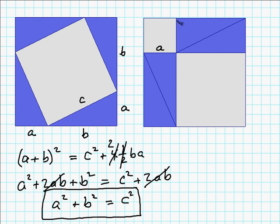And so this length is A. This length is A. So this area here is A squared. This is the longer leg of the triangle, and so is this. So this is B squared.